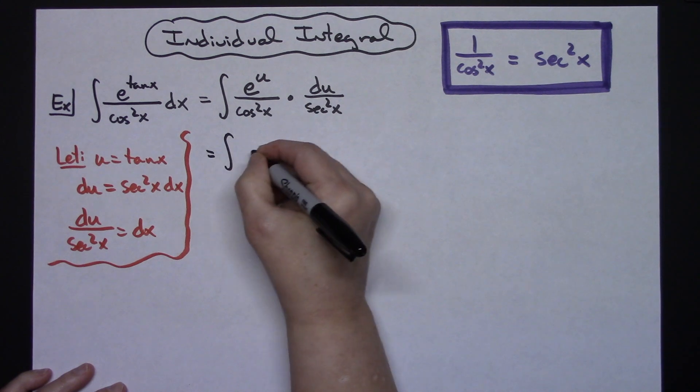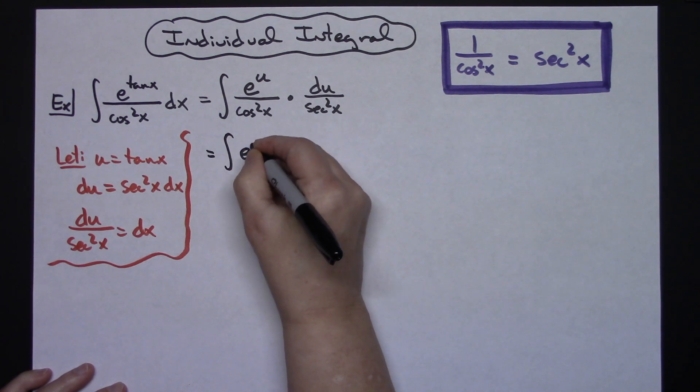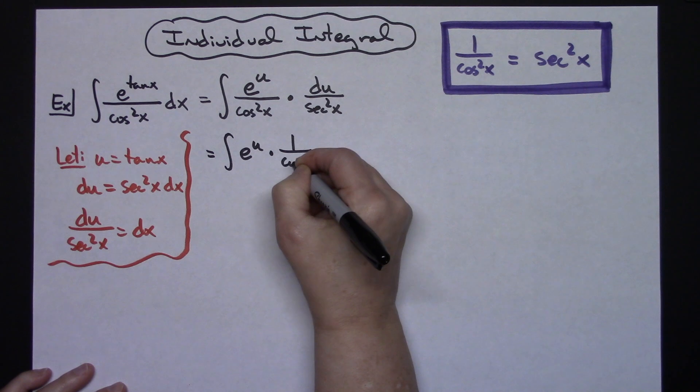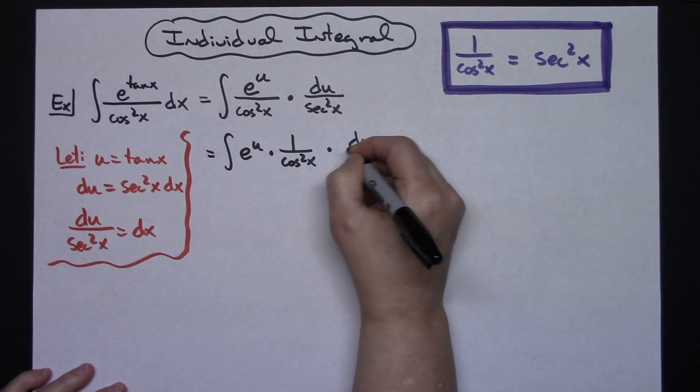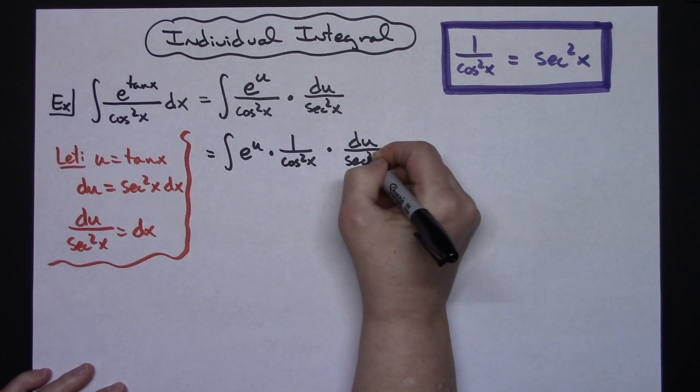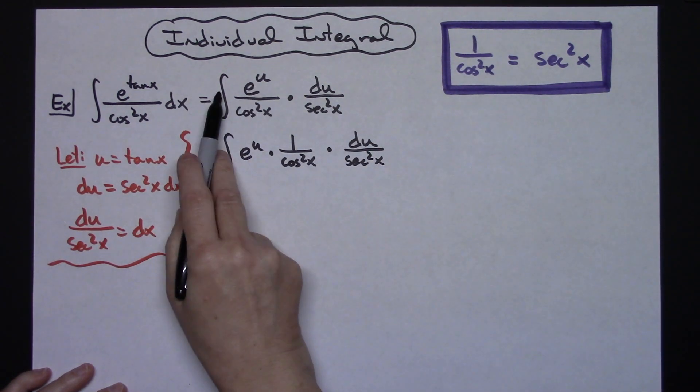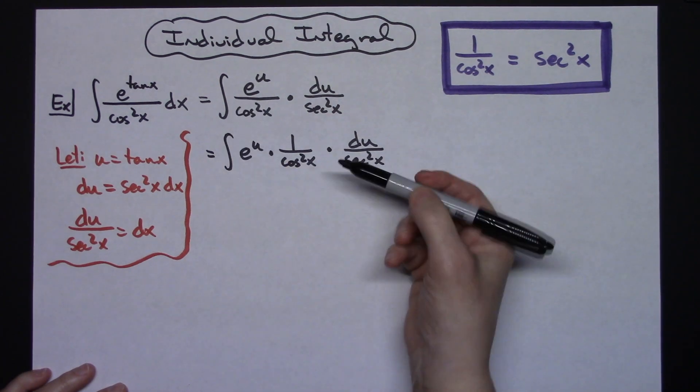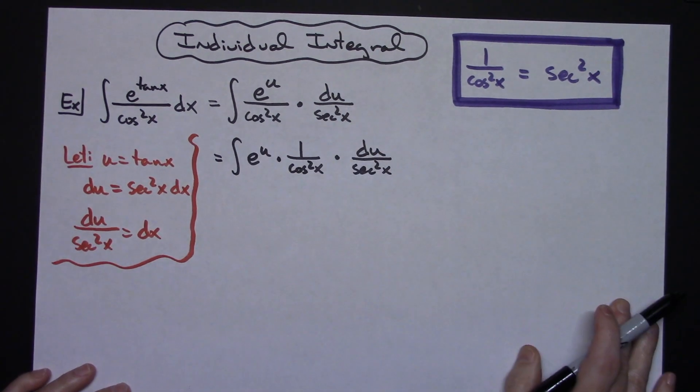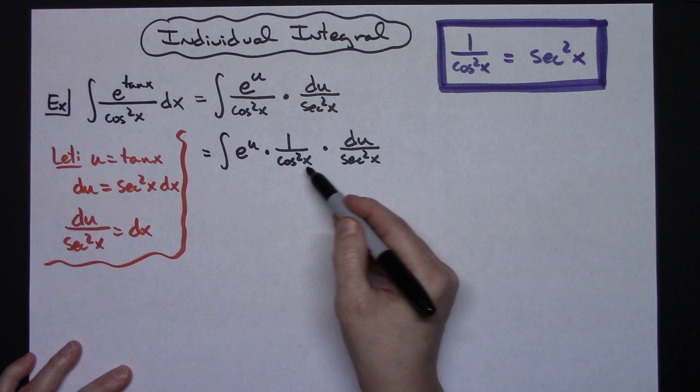If we've got the integral here we'll have e to the u times one over cosine squared x times du over the secant squared x. So all I did was pull that e to the u out showing I'm multiplying these two things which would be equivalent to that. That lets this stand out really easy there so I can make that substitution.